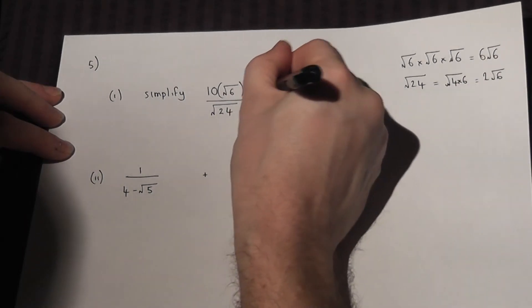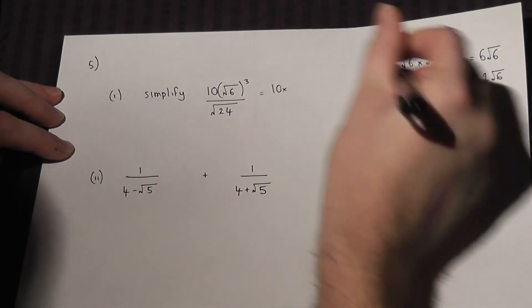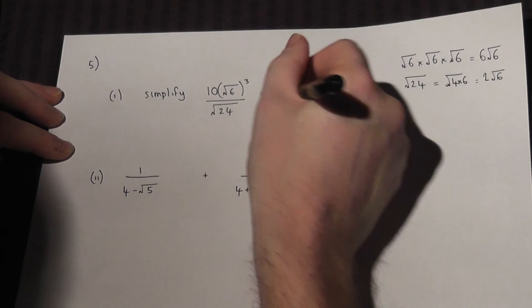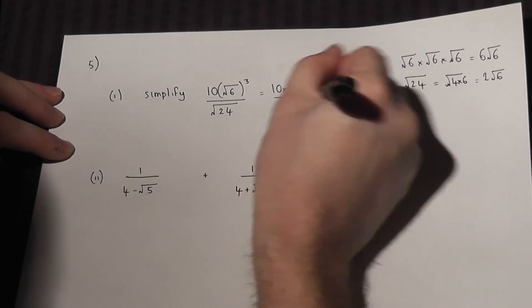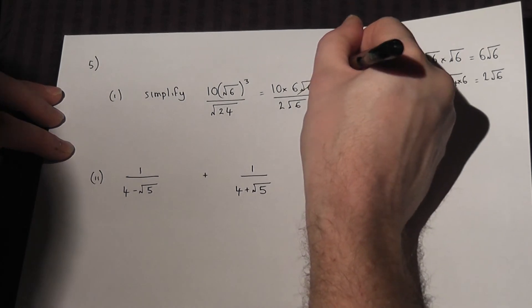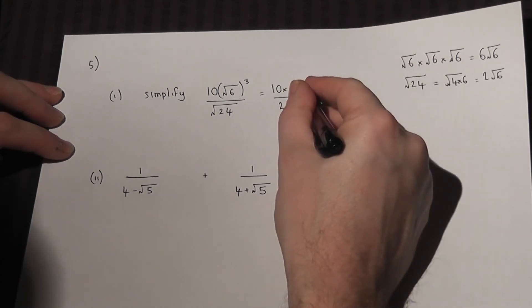So therefore this can be written as 10 lots of 6 root 6 all over 2 root 6. The root 6's both cancel off. So it's 10 times 6 over 2.